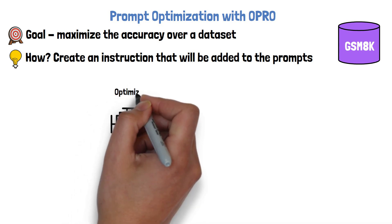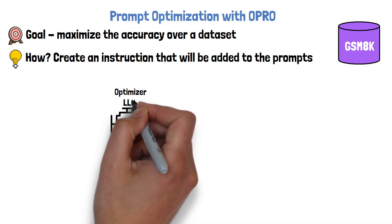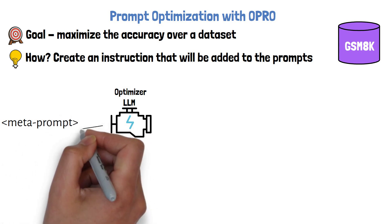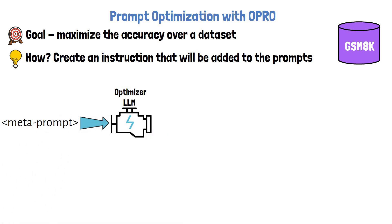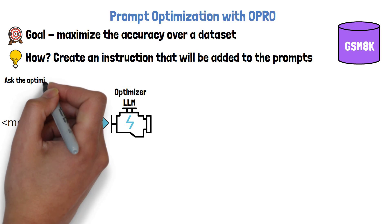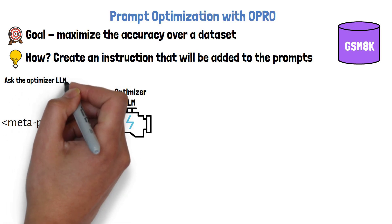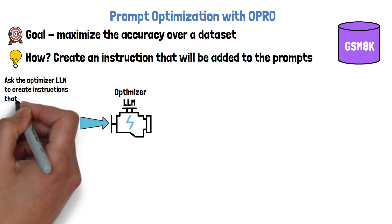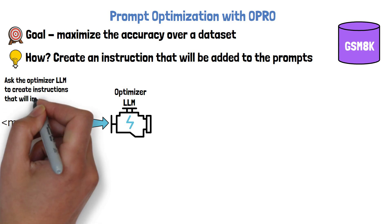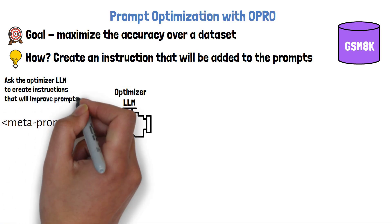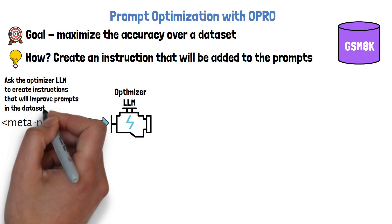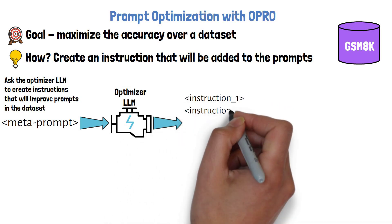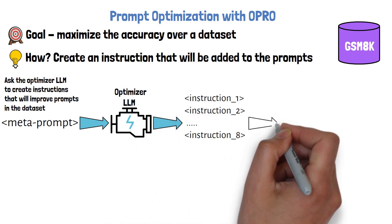We have a large language model we call the Optimizer LLM, and we feed it with a prompt which we call the MetaPrompt. We will soon see how the MetaPrompt is structured, but in the meanwhile just note that the MetaPrompt instructs the Optimizer LLM to yield a few instructions — in the paper they use 8 instructions — that will improve example prompts from the dataset. The Optimizer LLM then yields 8 candidate instructions.